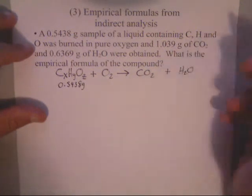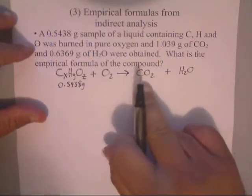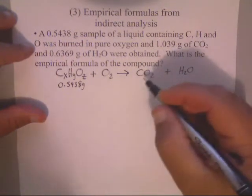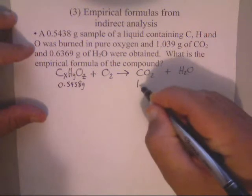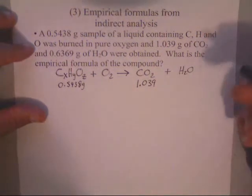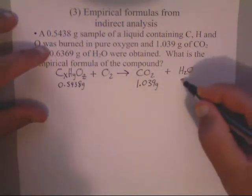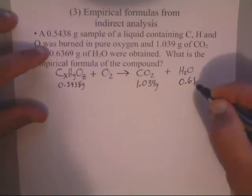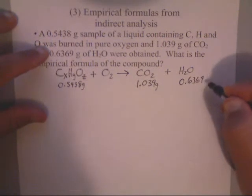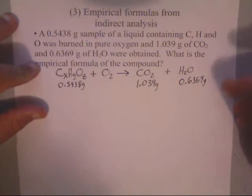Now, we don't have to worry about balancing because we're just looking at the thought process here. Now, they told us that they made, they obtained, 1.039 grams of CO2 and 0.6369 grams of water. They want us to calculate the empirical formula of this. We could almost do it if we knew the oxygen contents.